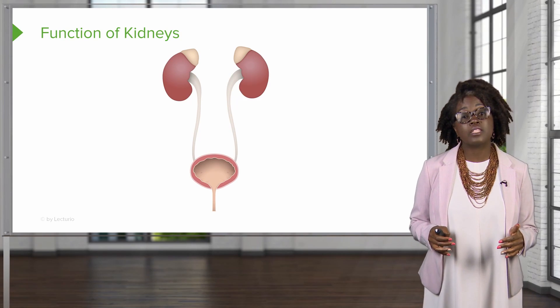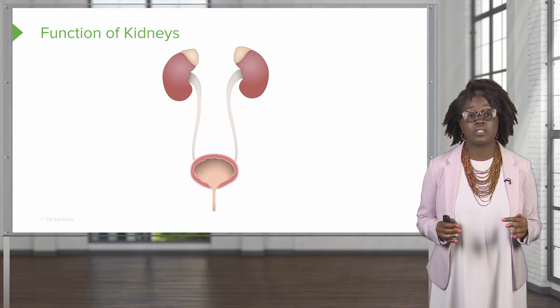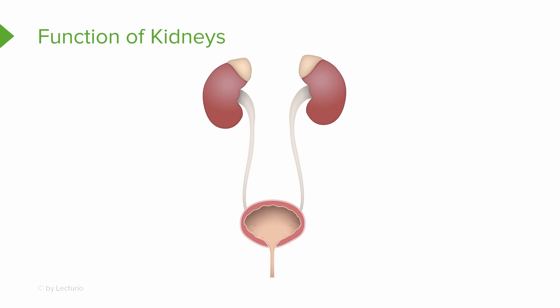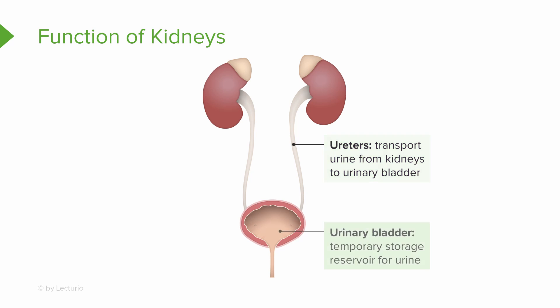The kidneys are part of the urinary system, which includes the ureters, which transport urine from the kidneys to the urinary bladder. The urinary bladder is our temporary storage reservoir for urine. And the urethra transports urine out of the body.